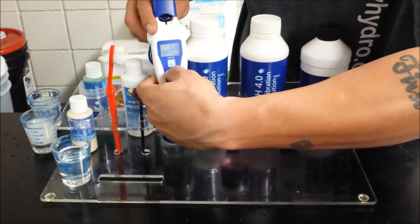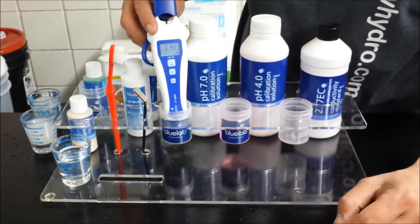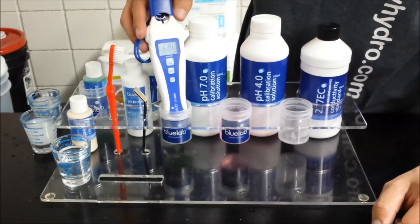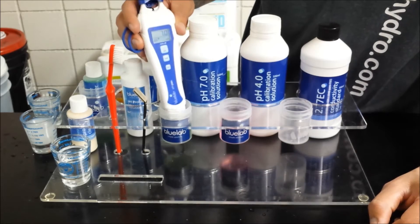Once it settles, go ahead and hold down the cal button until it says cal. Release and then it should lock on 7 for you. There we go.